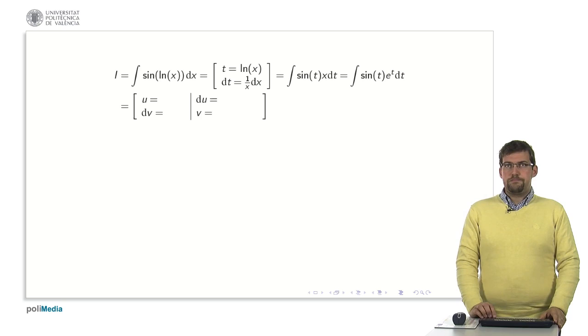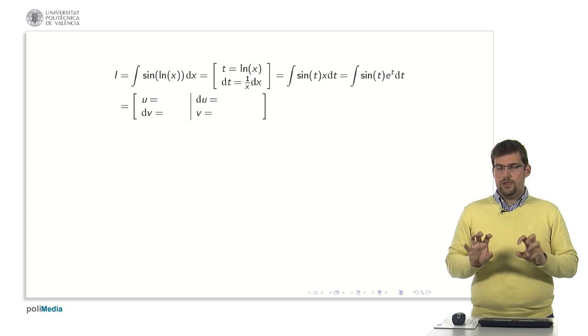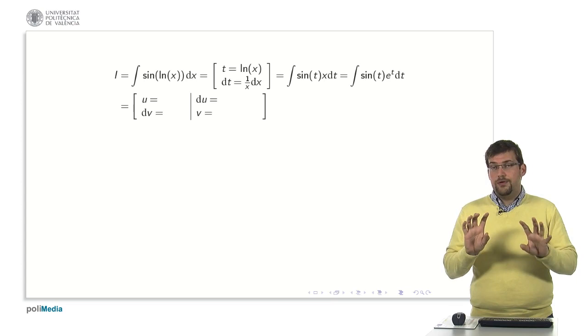Therefore if t is the natural logarithm x is the exponential function. We can make this substitution as indicated in the presentation and therefore continue forward. Once we get to this point we find out that this integral is a product of two functions, the sine and the exponential.